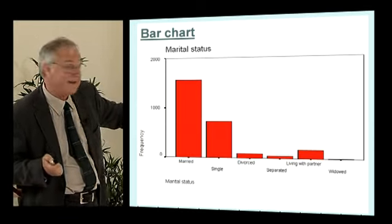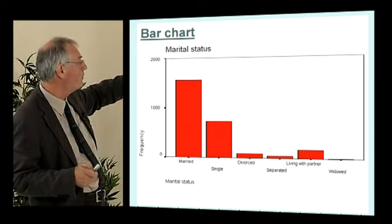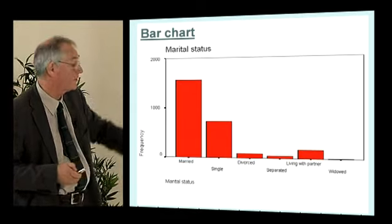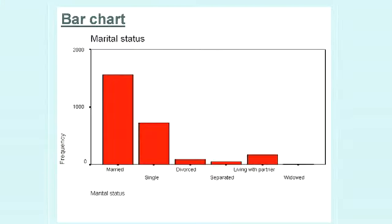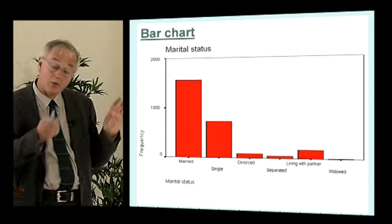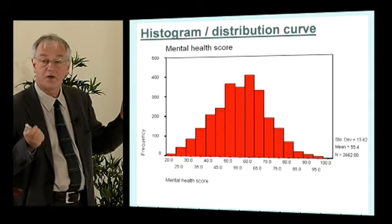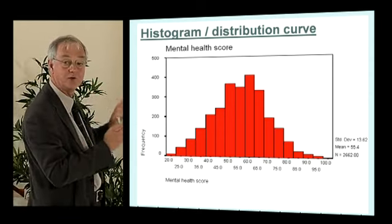Numbers are very boring, so what we often do is convert them into diagrams. This is a simple bar chart showing the numbers of people who had different marital status categories in a stress research project. The length of the bar just represents the number of people in each category. That's everything I have to say about categorical data. What I want to do now is retain that concept but move it into continuous data.